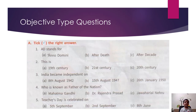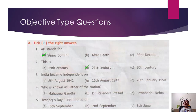Objective type questions. A: Tick the right answer. Question 1: AD stands for — Anatomy After Death, After Decade — so the answer is Anno Domini. Question 2: This is the — 19th century, 21st century, 20th century — so the answer is 21st century.